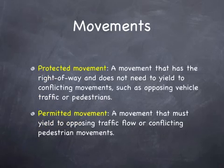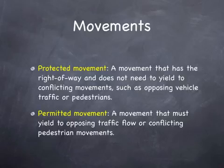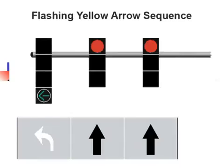There are movements. Protected movements have no conflicting traffic when making the movement. The protected movement has the right of way and doesn't have to yield to other conflicting movements, opposing vehicles, or pedestrians. The permitted movement is most common for left turns. If you're making a left turn on a green ball without a green arrow, you have the permission to make that movement so long as it's safe, but you are not protected.